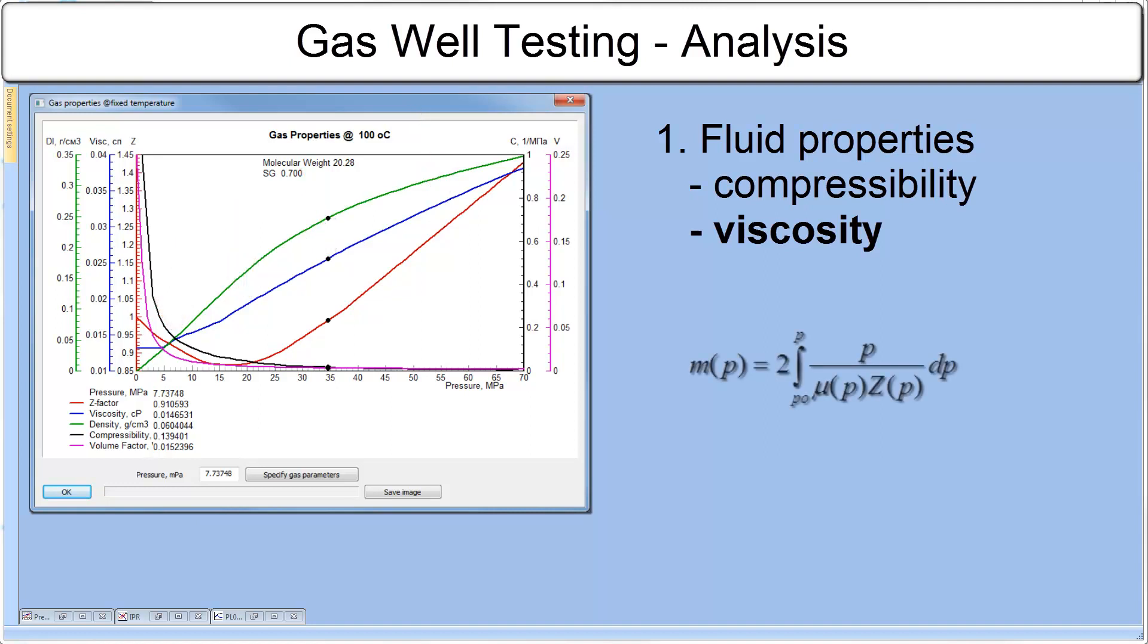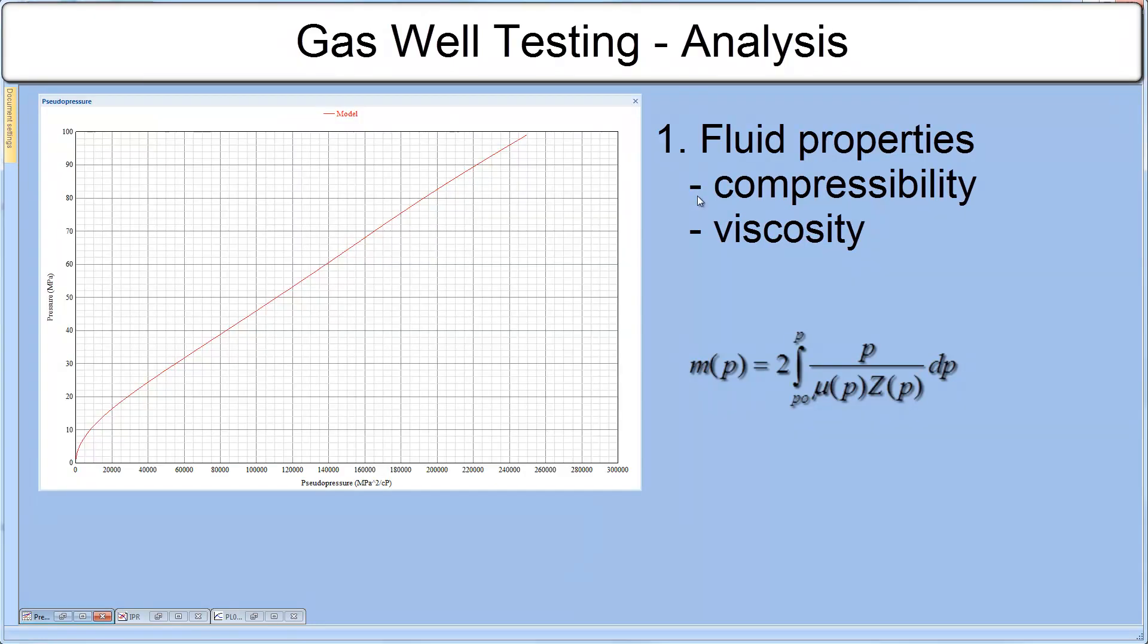In general, the pressure data is converted into pseudo pressure, which is defined by the integral. The pseudo pressure corrects the effects of change of gas viscosity and compressibility. See the plot of pressure versus pseudo pressure. Note that only for high pressure wells the gas behaves like a slightly compressible fluid and the pressure data can be used directly for the analysis. For pressure below around 250 bar, it's not linear at all.